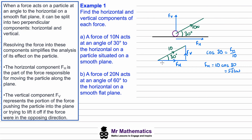So this 10 newtons has a horizontal force parallel to the plane of 5√3 newtons. We can use a similar idea to work out the vertical component. FV is the opposite side in our right angle triangle, so we use sine. This gives 10 × sin 30, which works out as 5 newtons. So the 10 newton force has a 5 newton component acting vertically upwards. This is how you work out the horizontal and vertical components of a force acting at an incline to a plane.